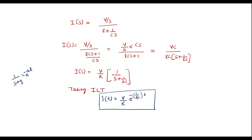Here RC is known as time constant, which can be represented as tau. That is, tau is equal to RC, the time constant. So this is the expression for current in the RC circuit.